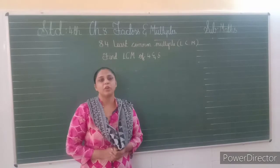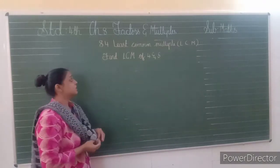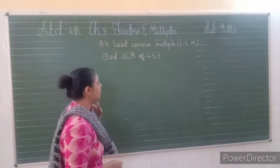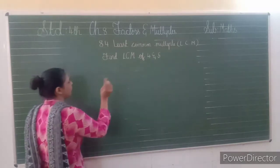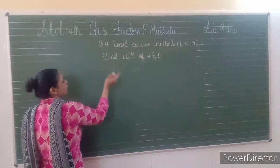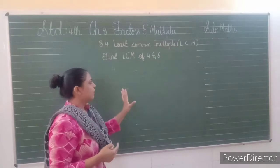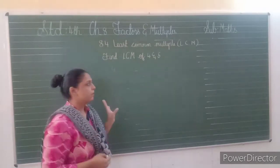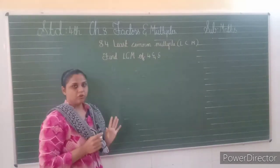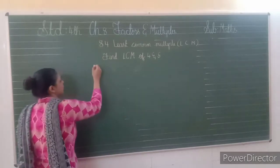The second sum given in our book is: find out the least common multiple of 4 and 5. What are we going to do? We are going to apply the same method we used before. First, let us find out the multiples of 4, then we will find out the multiples of 5.